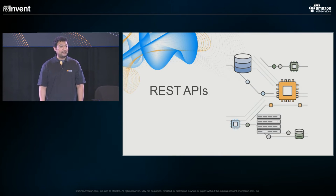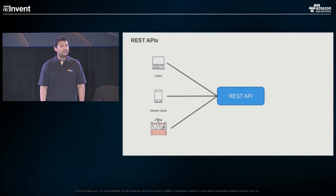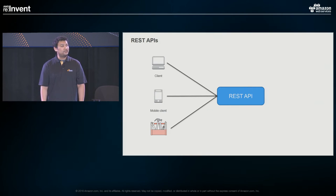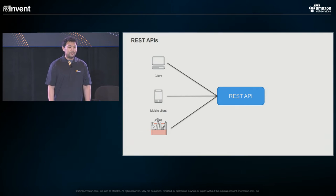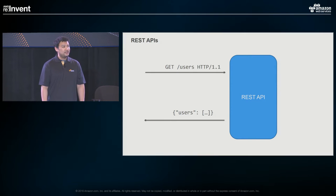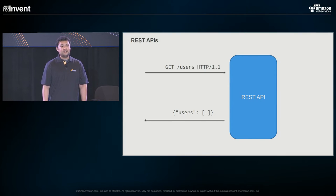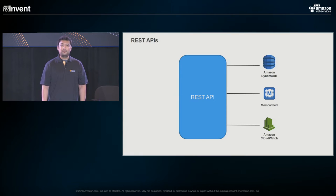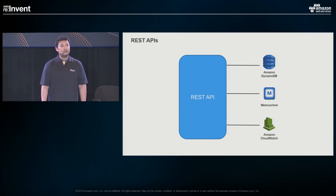REST APIs are everywhere — from web clients to mobile clients, mobile games that talk to backend APIs to store user or game data, and even if you expose a REST API so that other services can integrate with you, like GitHub or Twitter. The nice thing about REST APIs is that they're pretty straightforward. On the left side is what a user of the API sees: you make a request and get data back — in this example a GET request to /users returning a JSON response. On the backend you might use DynamoDB, Memcached, and CloudWatch for monitoring.